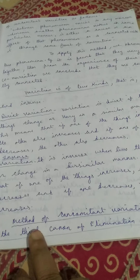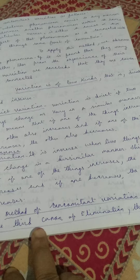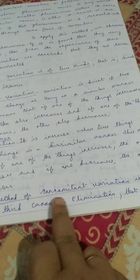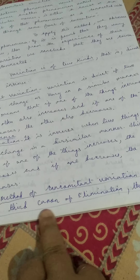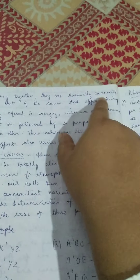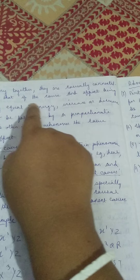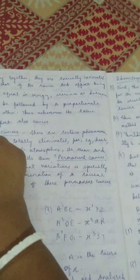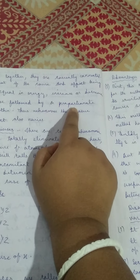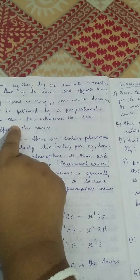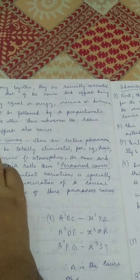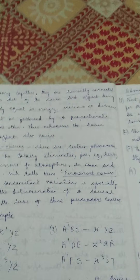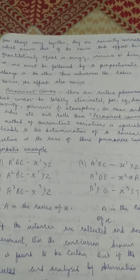The method of concomitant variation is connected with the third canon of elimination. The third canon states: if two things vary together, they are causally connected. This means that if the cause and effect, being quantitatively equal in energy, increase or decrease in one must be followed by the proportionate change in the other. Thus whenever the cause varies, the effect also varies.